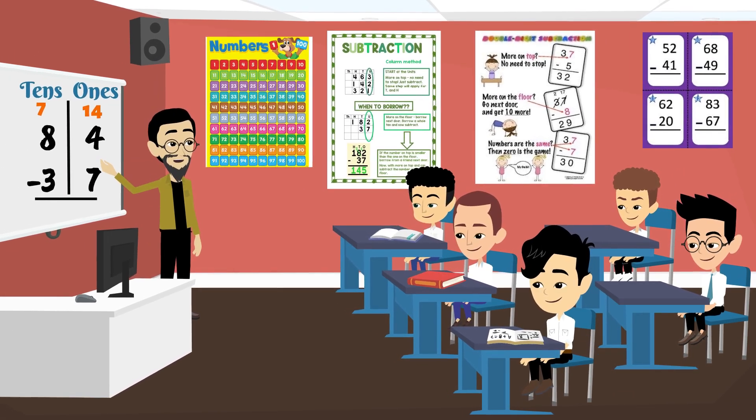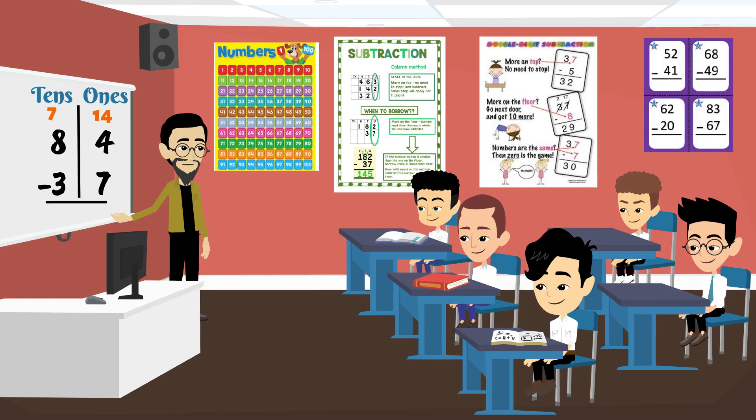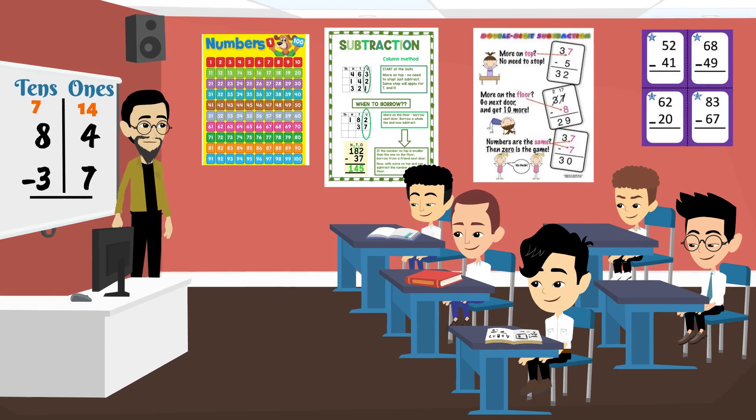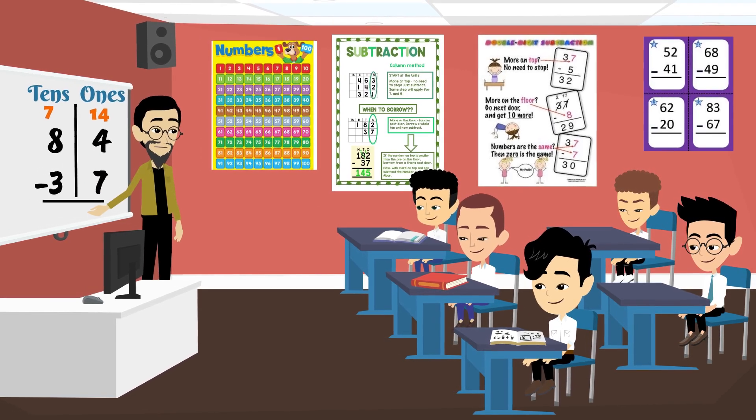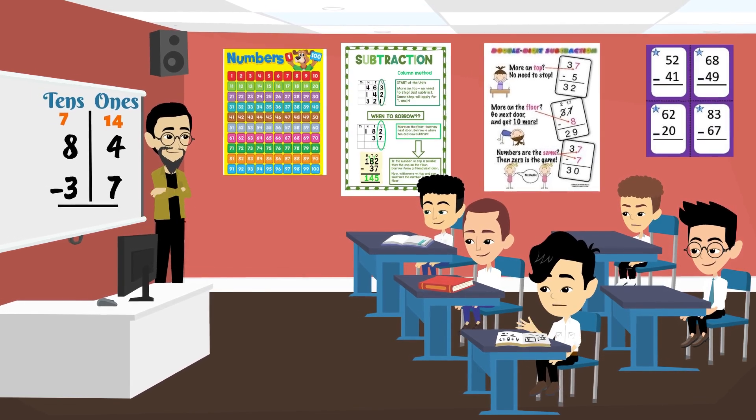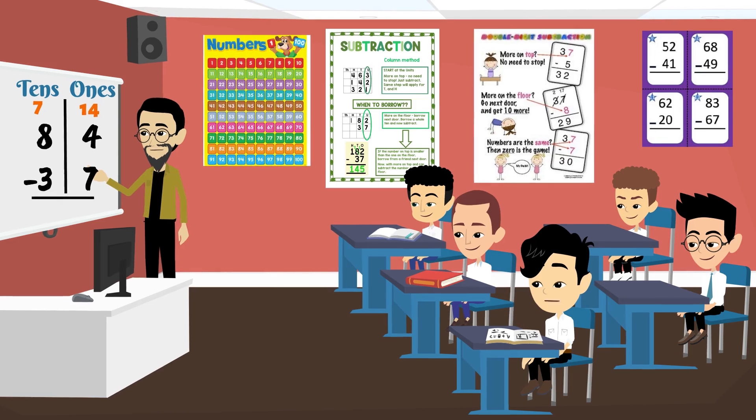Now, let's subtract. 14 minus 7. What do we get? That's 7. Awesome. Now, let's go to the 10's place. 7 minus 3. What do we get? That's 4. Yes.